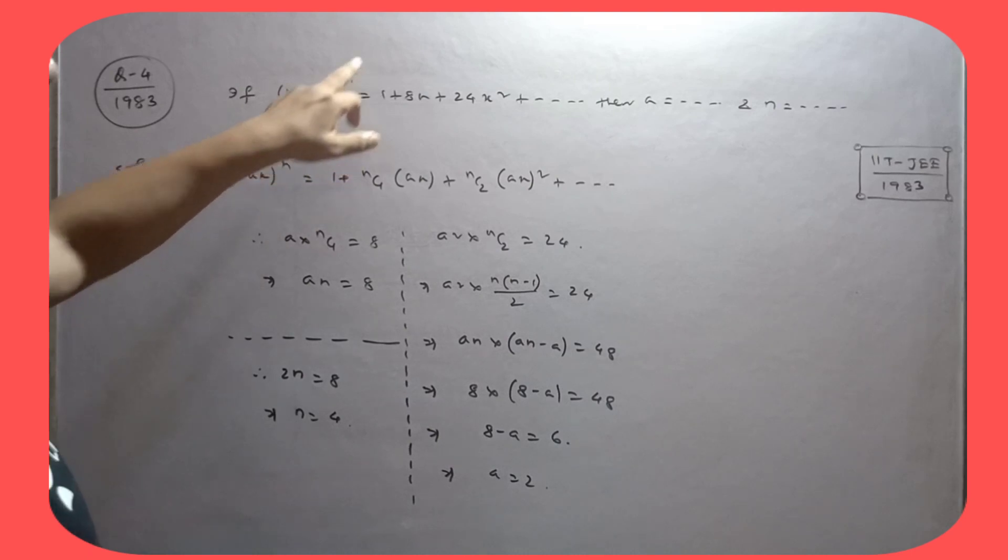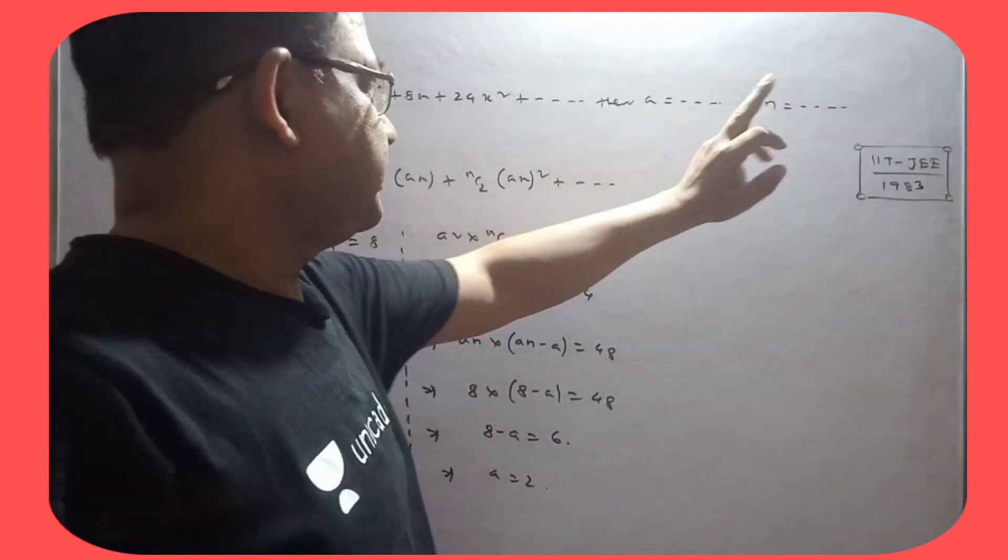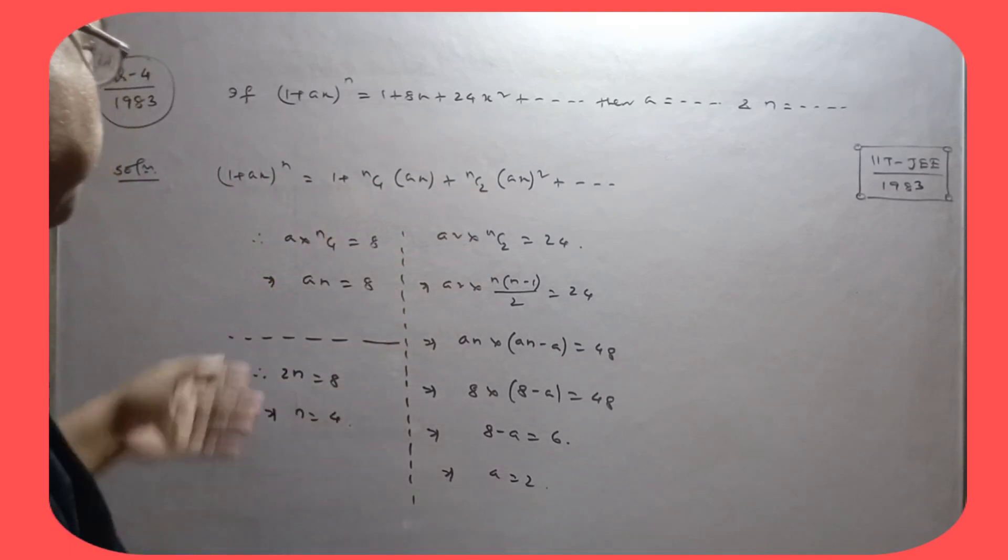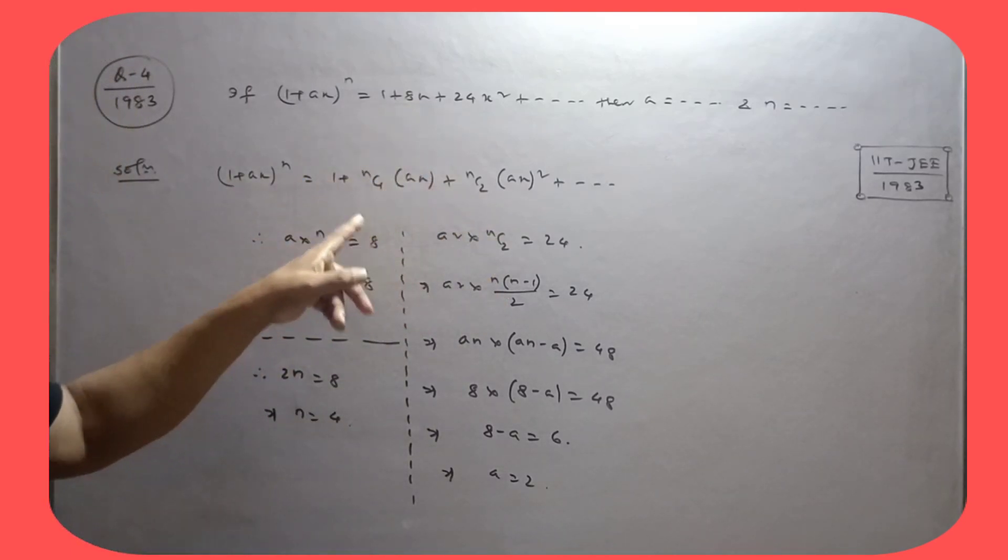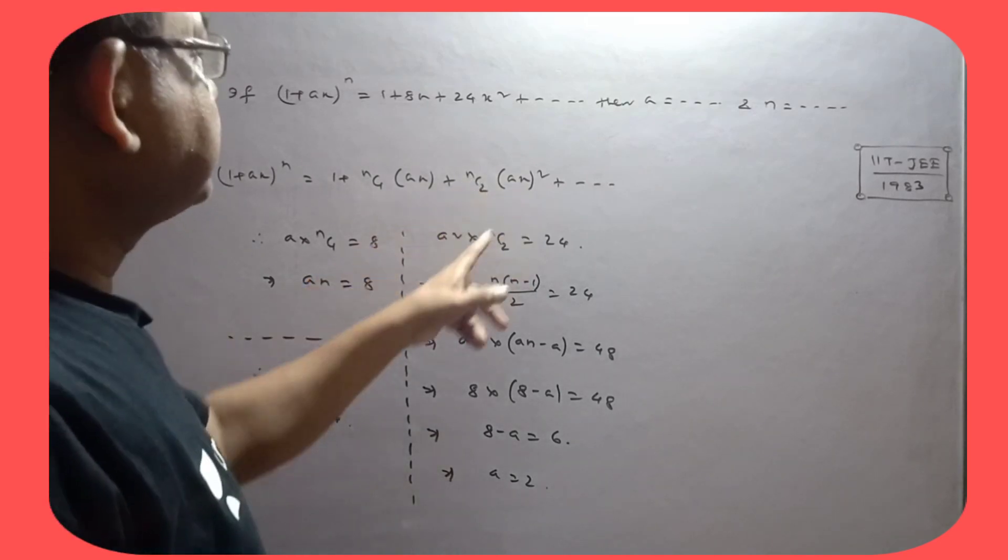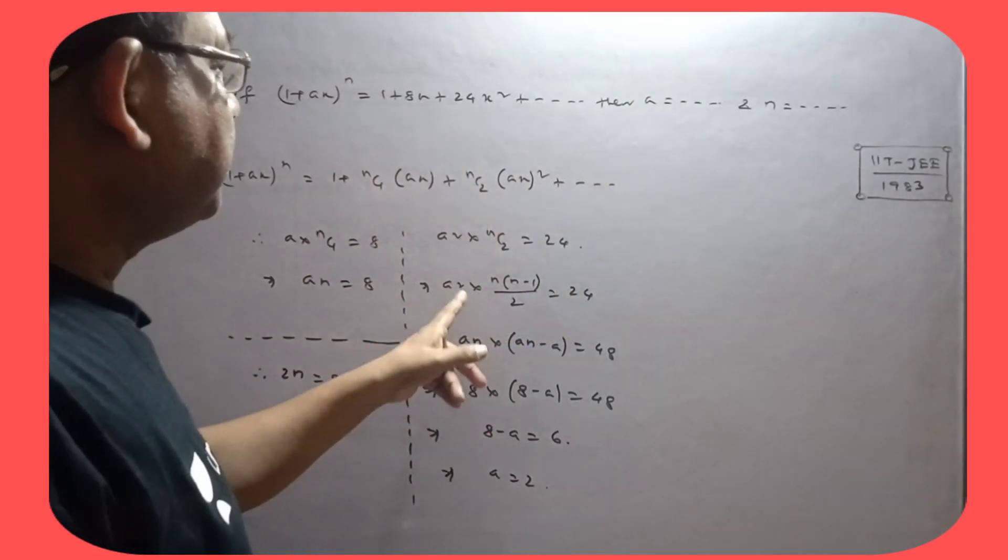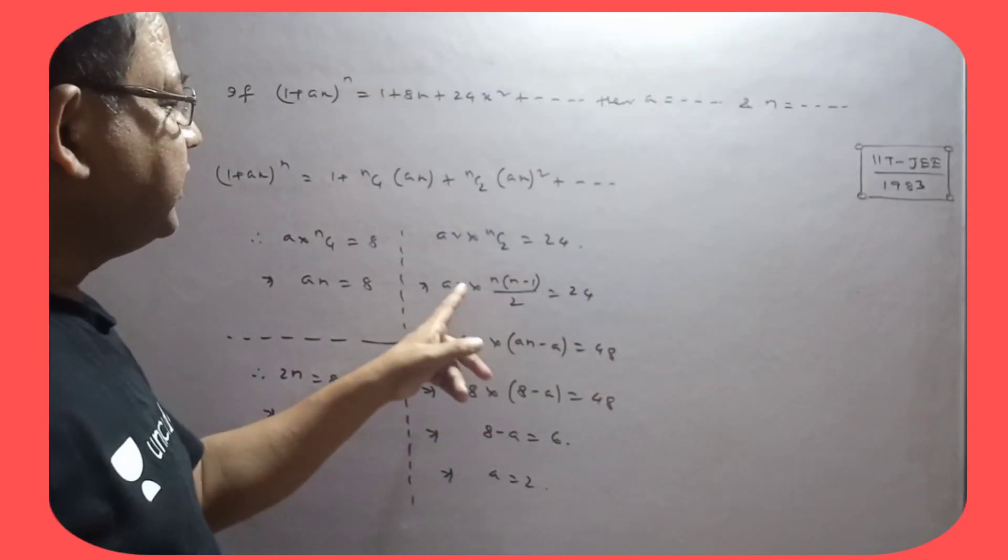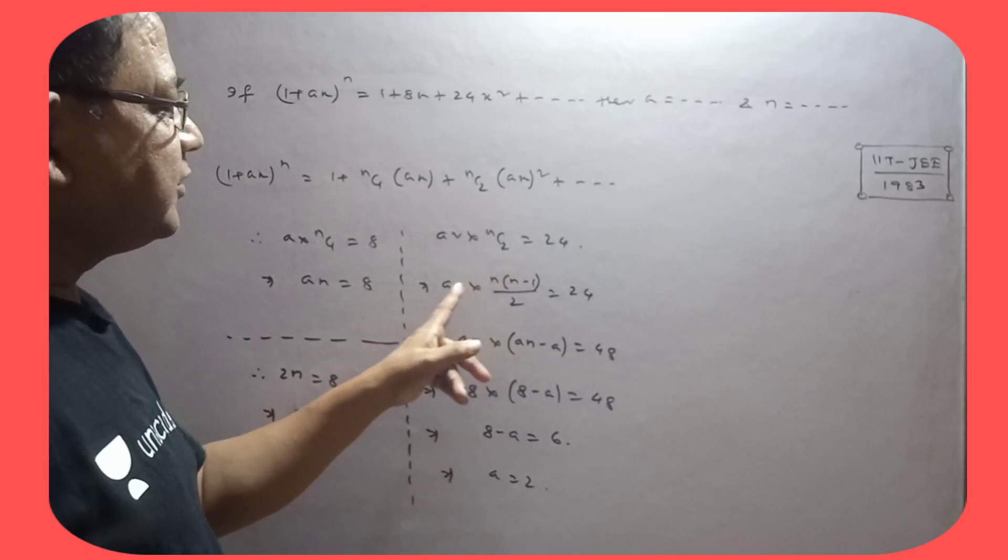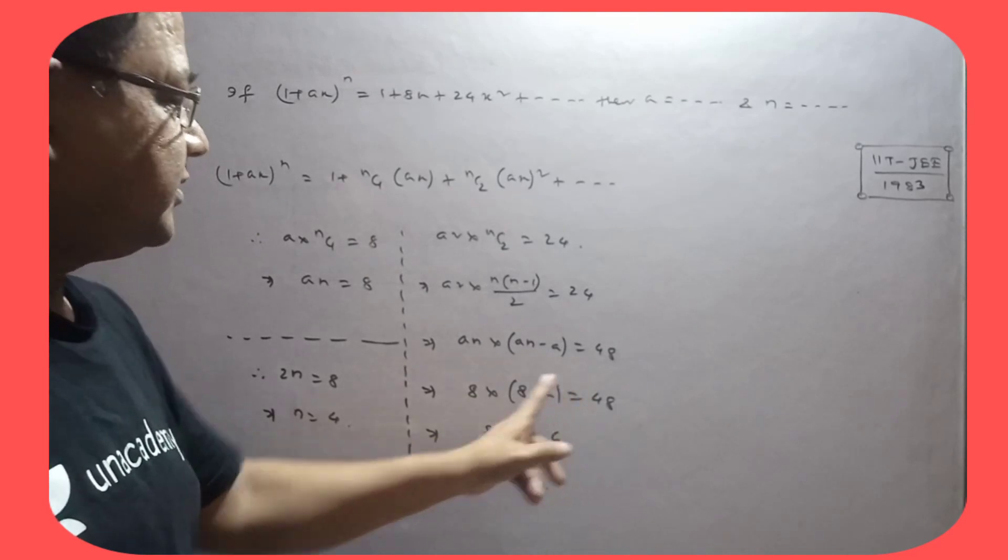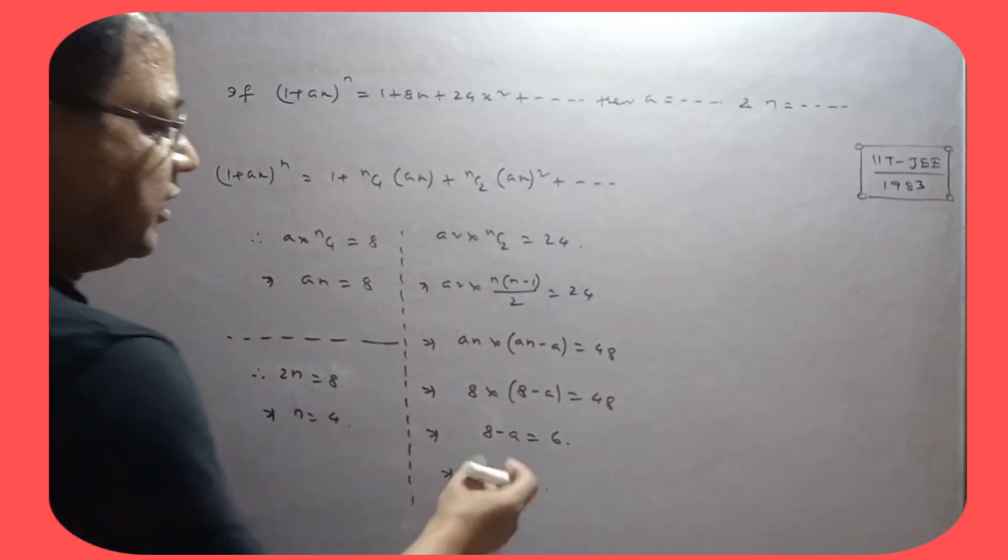If 1 plus x to the power n equals this expression, find a and n. Apply binomial theorem and compare: a times nC1 equals 8, so anC1 equals 8, which means an equals 8. Also, a squared times nC2 equals 24, so n into n-1 by 2 equals 24, giving 48. Multiply the first equation by 8: 8a times 8n minus 8a plus 48.